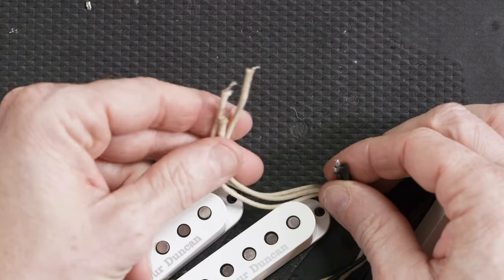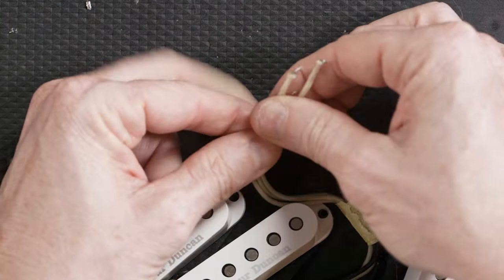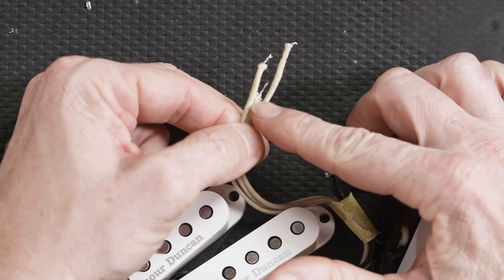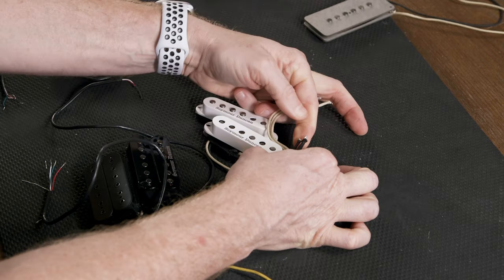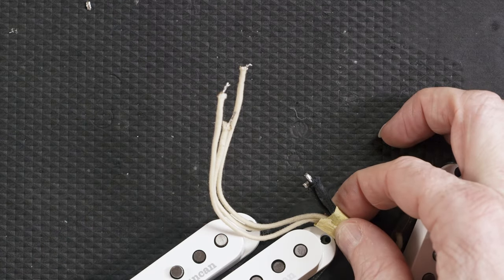Here's some Strat pickups. As you can see, all the hot leads are together here and this would connect to the five-way switch, where these ground wires would be connected to the back of the potentiometer.